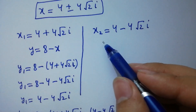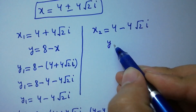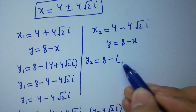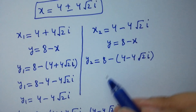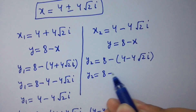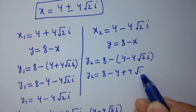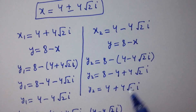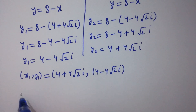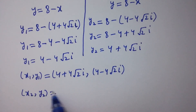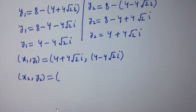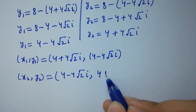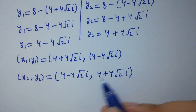For x₂ equal to 4 minus 4 square root of 2 i: y₂ equal to 8 minus (4 minus 4 square root of 2 i), which gives y₂ equal to 8 minus 4 plus 4 square root of 2 i, so y₂ equal to 4 plus 4 square root of 2 i. The second pair is x₂ = 4 minus 4 square root of 2 i and y₂ = 4 plus 4 square root of 2 i. These are the values of x and y.